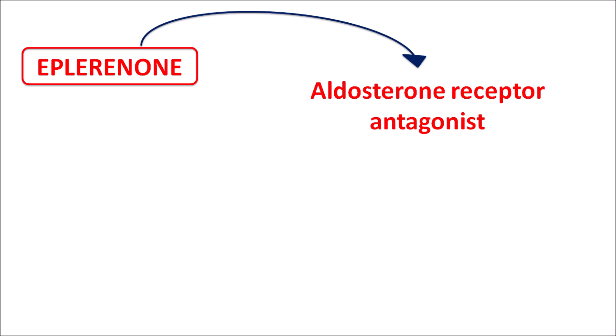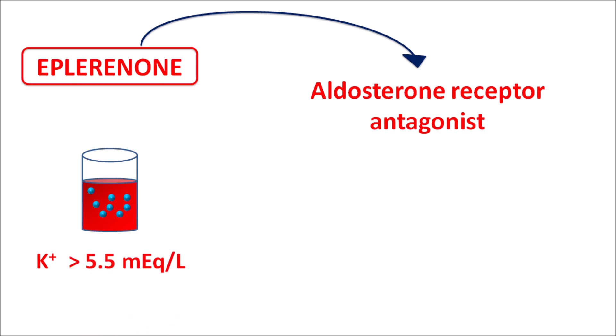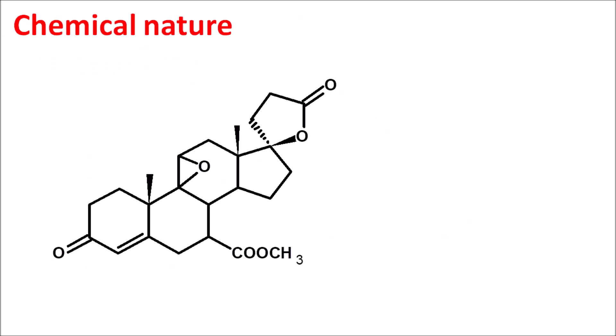However, this drug is contraindicated in a few conditions. Particularly, potassium levels are important — when serum potassium levels are greater than 5.5 mEq/L, this drug is contraindicated, because eplerinone is a potassium-sparing diuretic and can further increase potassium levels, resulting in severe hyperkalemia. It is also contraindicated in patients with creatinine clearance less than or equal to 30 mL per minute.